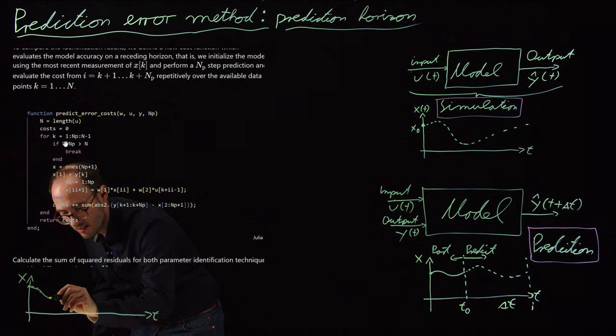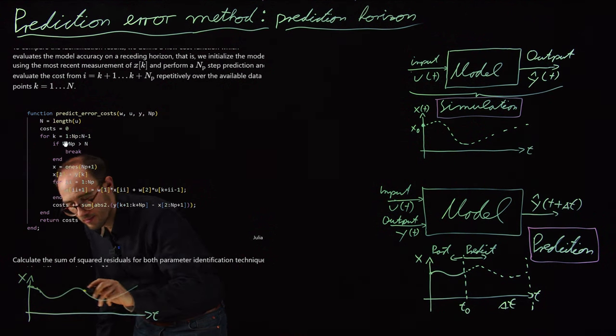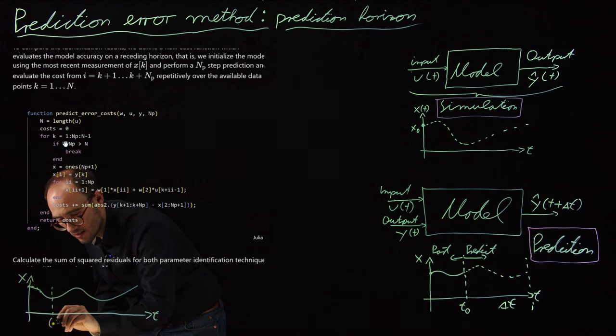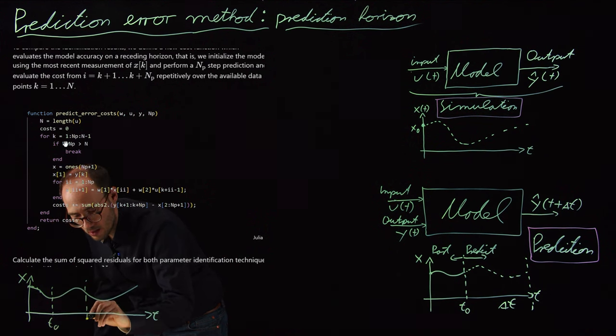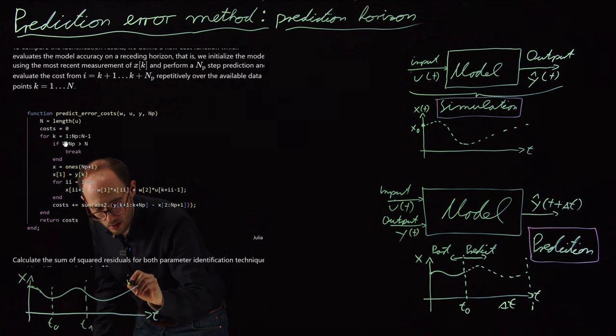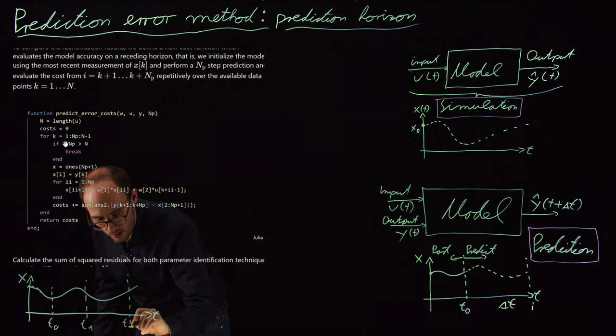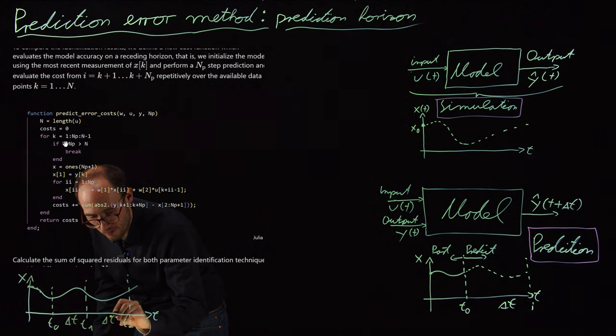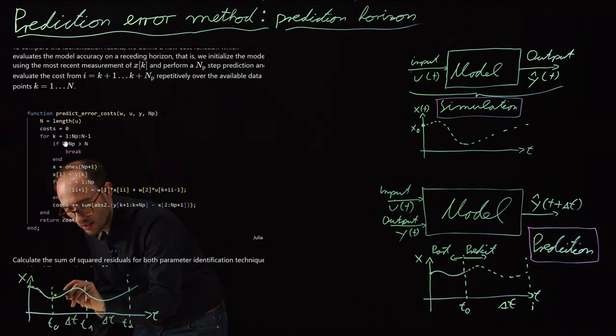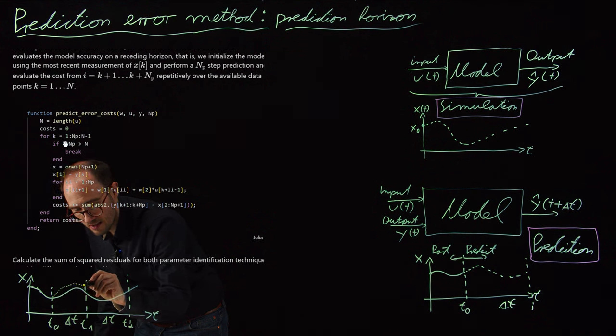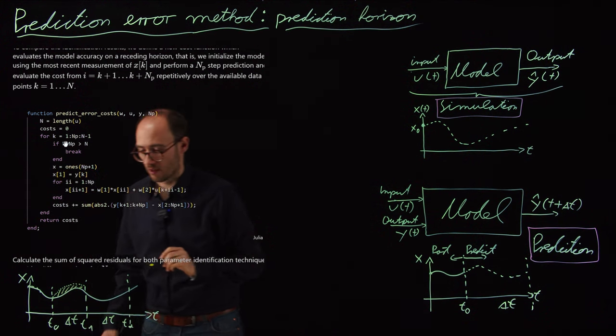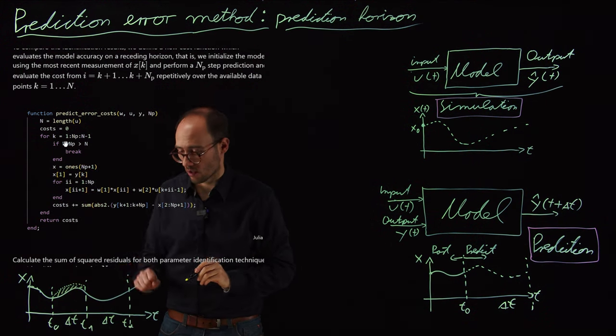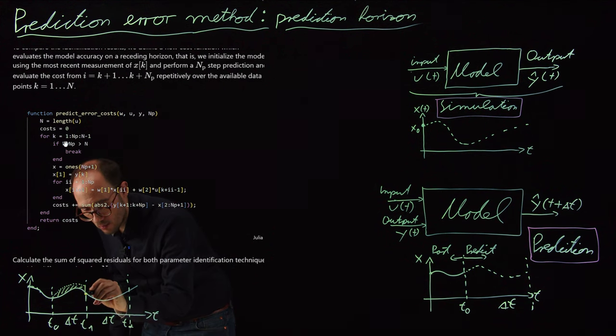Let's say this is the time axis and this is the state axis. Let's say this is the true system and that is T0, T1, T2 with time steps delta t in between. From this point on in the prediction case, we would predict something like this. Then this would be our error area of the prediction error.